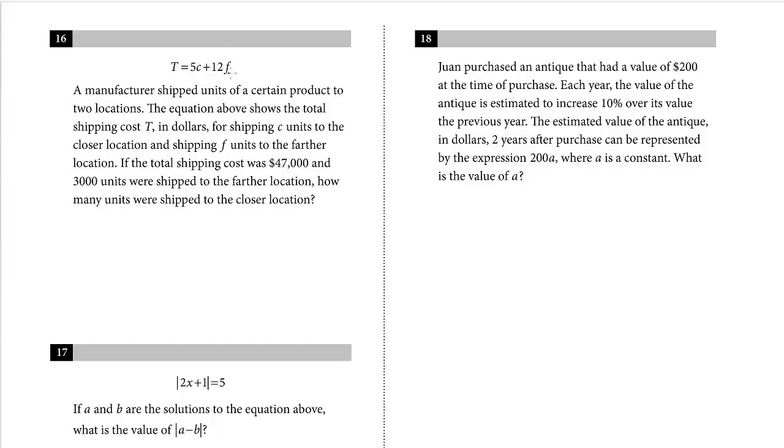T equals 5C plus 12F. A manufacturer shipped units of a certain product to two locations. The equation shows the total shipping cost T in dollars for shipping C units to the closer location and F units to the farther location. If the total shipping cost is $47,000 and 3,000 units were shipped to the farther location, how many units were shipped to the closer location? We just have to solve it. Pay attention to the information. T is the total, and we're told the total is 47,000. That's the total amount for both destinations. We want to solve for the closer, and we're given 3,000 units were shipped to the farther.